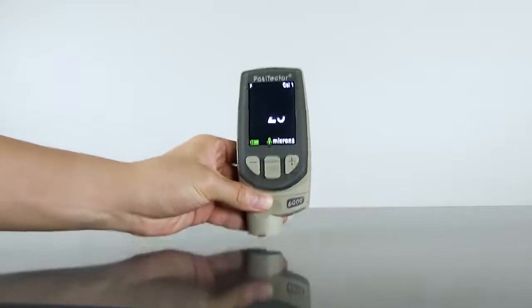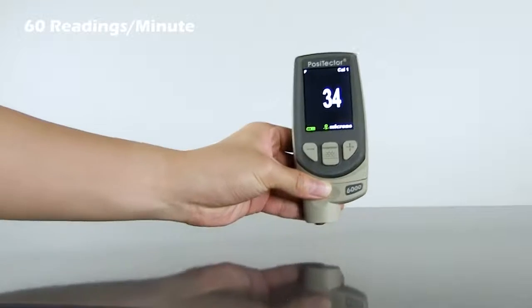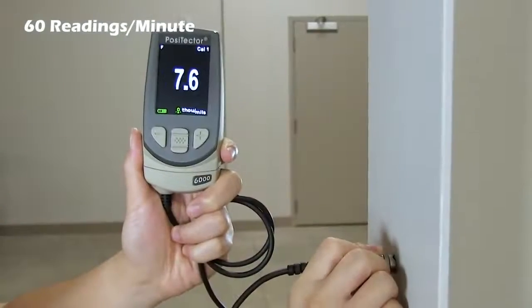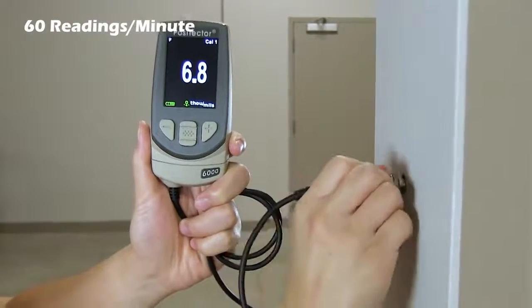Positector 6000 probes now take over 60 readings per minute, achieving increased measuring speed without compromising quality, accuracy, or performance.